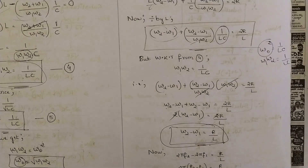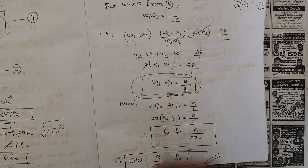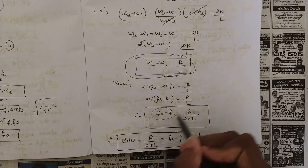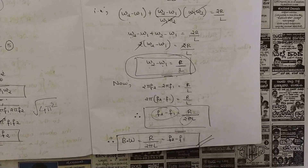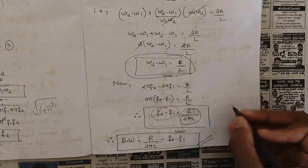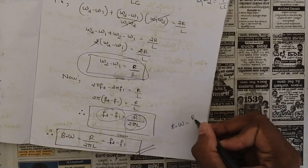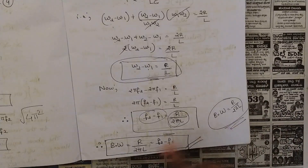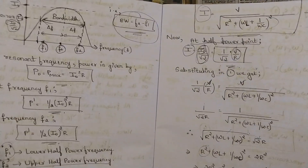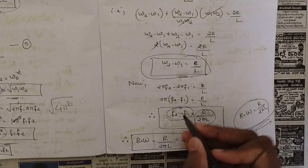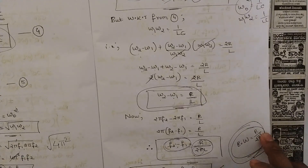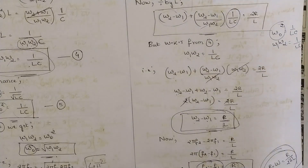So the difference between the two half-power angular frequencies equals R/L, where R is resistance and L is inductance. Converting to ordinary frequency using ω = 2πf, we get f₂ − f₁ = R/(2πL). Since bandwidth is defined as f₂ − f₁, the final expression for bandwidth is BW = R/(2πL). This is a very important formula to keep in mind.